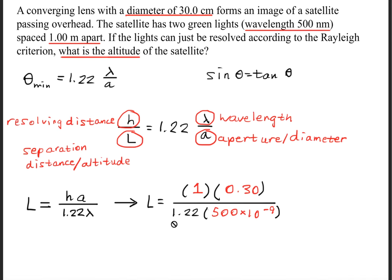Now, if you're curious about what this 1.22 is, it's just this constant variable that's kept in this equation right here. It doesn't change. It's always there when we're dealing with Rayleigh criterion questions.